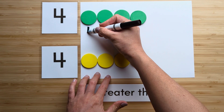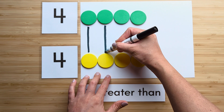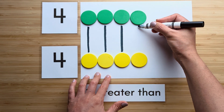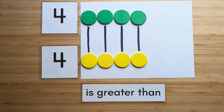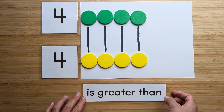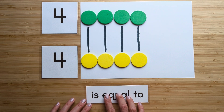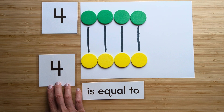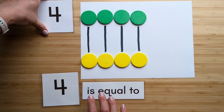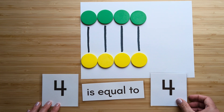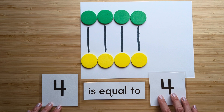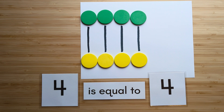Now let's compare. Match them up. Which one has extra? There are no extras. Four and four are the same. That means four is equal to four. Nice job. Clear off your boards to try the next one.